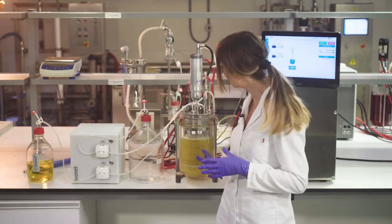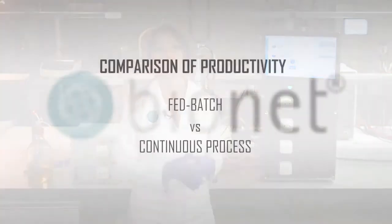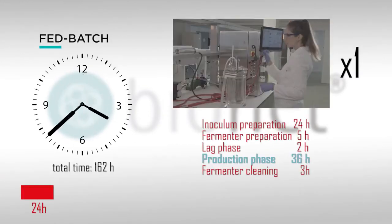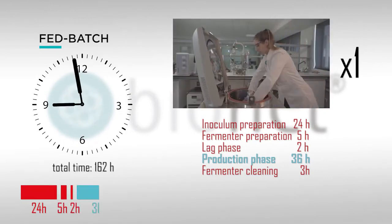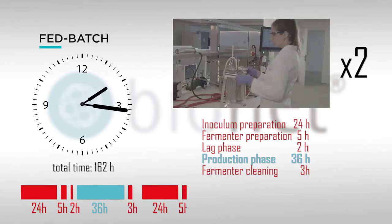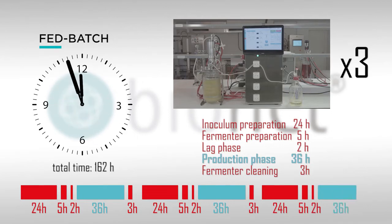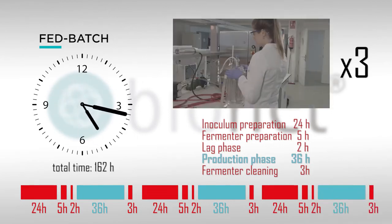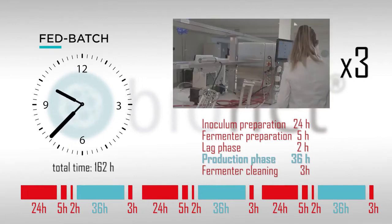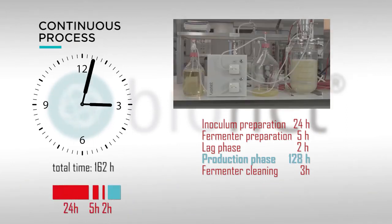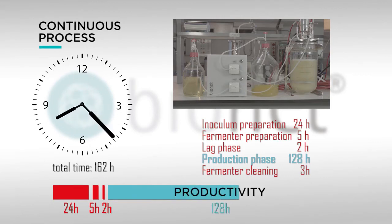As you may know, productivity is the amount of product you get per volume of the bioreactor per hour of the process. When the volume stays constant, the effective time of production is prolonged and the reactor downtime is shortened, the productivity is higher.